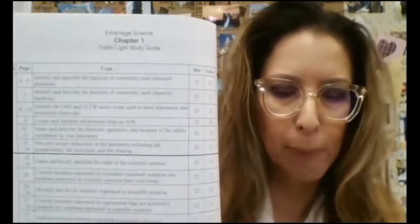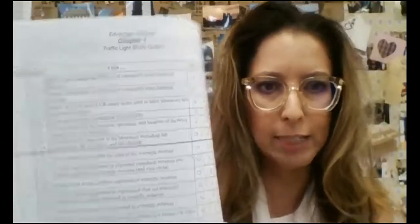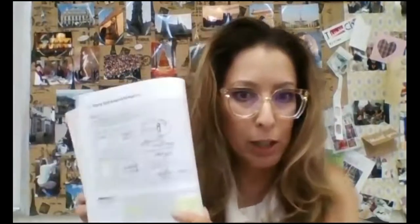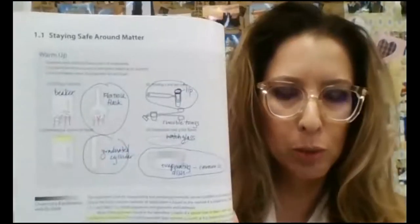If you turn to the next page, you'll also see the chapter review. This is known as a traffic light study guide that is in front of each chapter. Students will also have access to the ebook, so this will be in digital form. Not only will I be able to write on it with a sketch pad while lecturing and students can see it, but students are also able to write their own notes on top of mine.